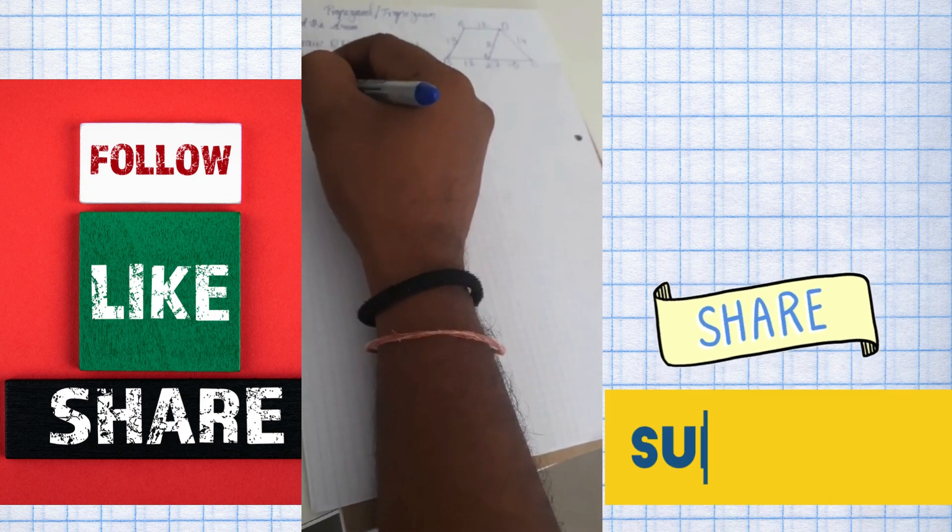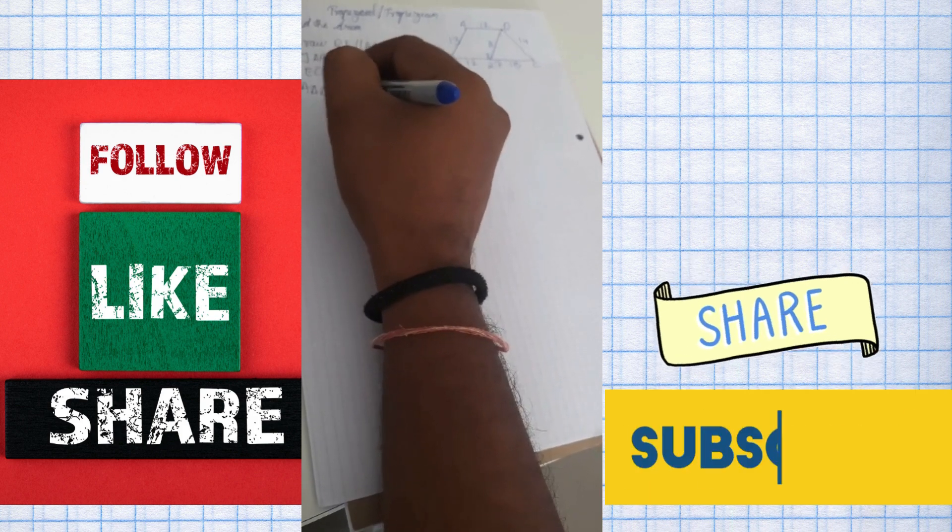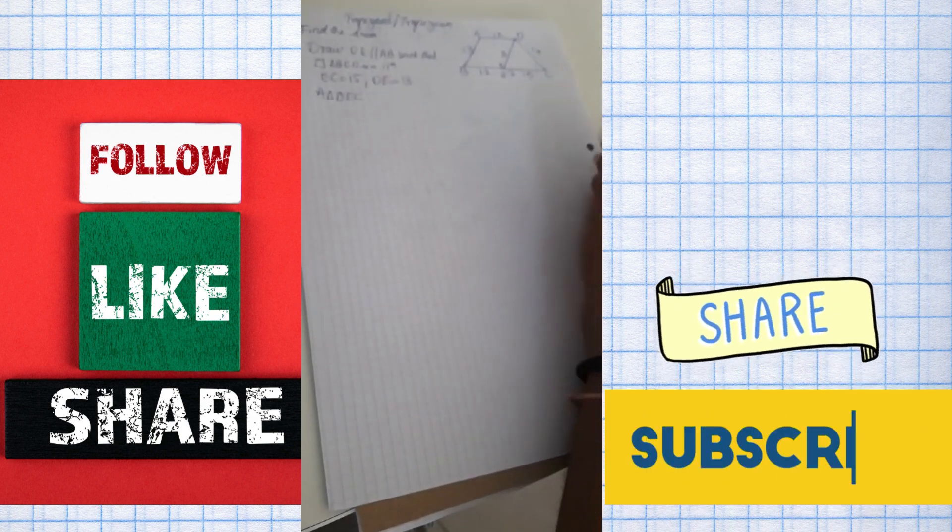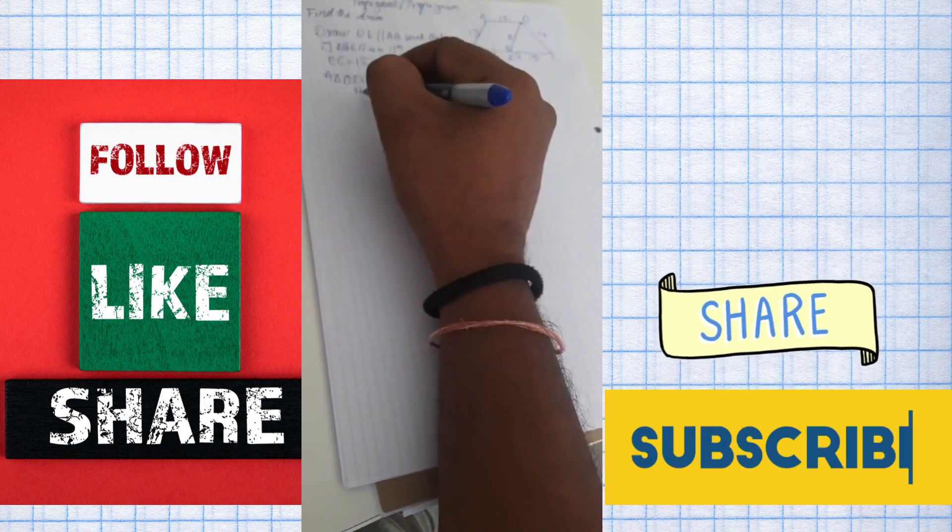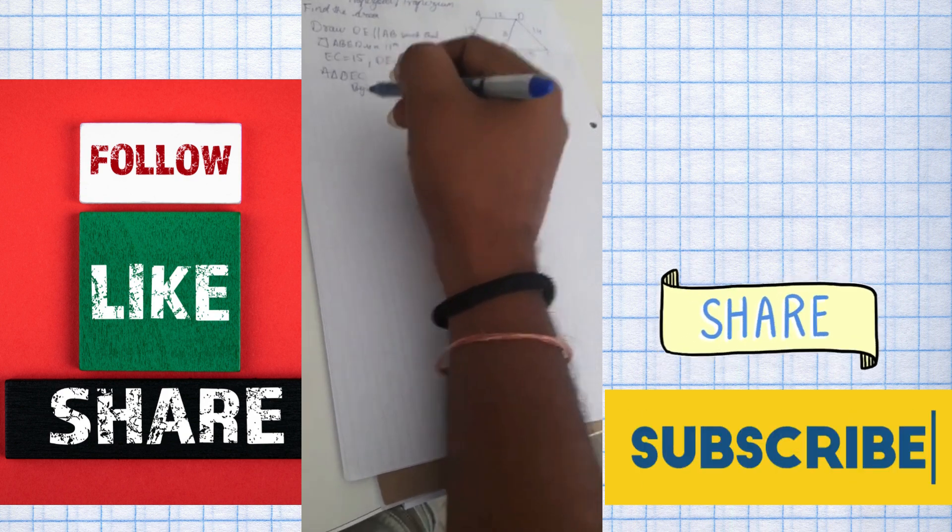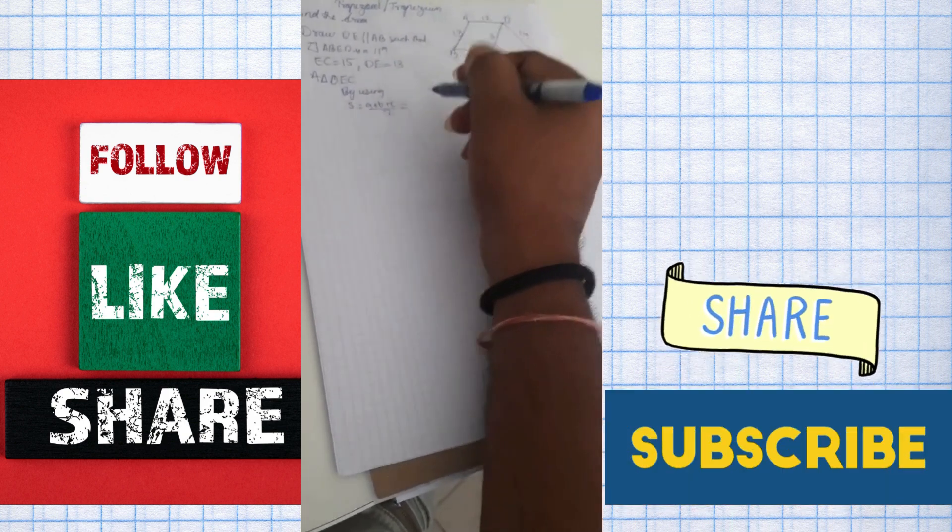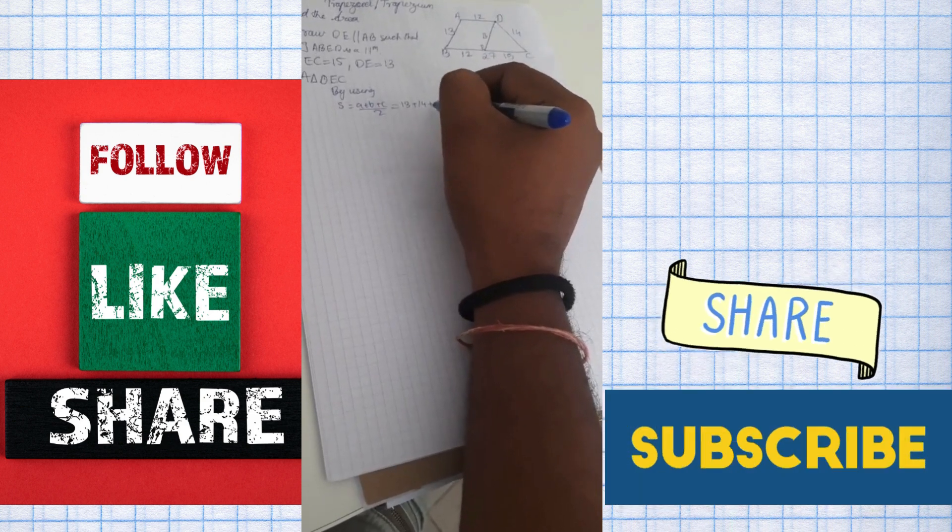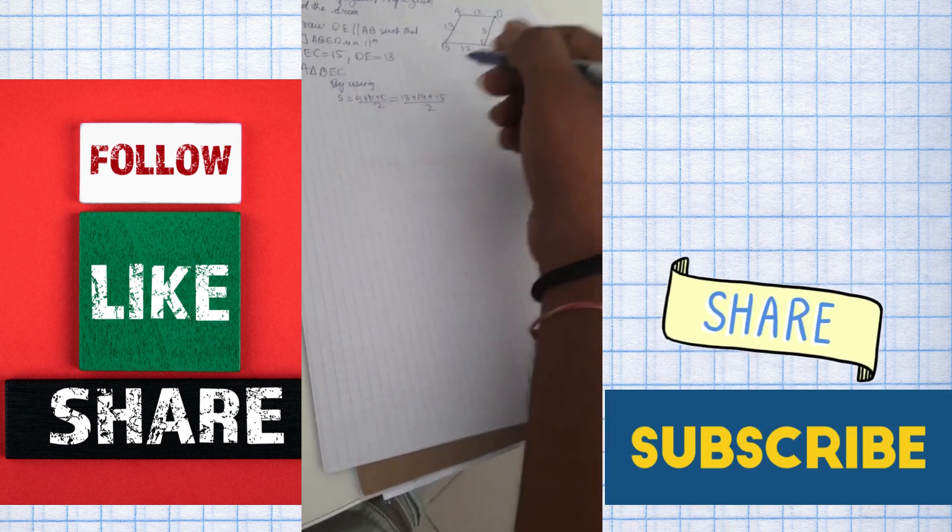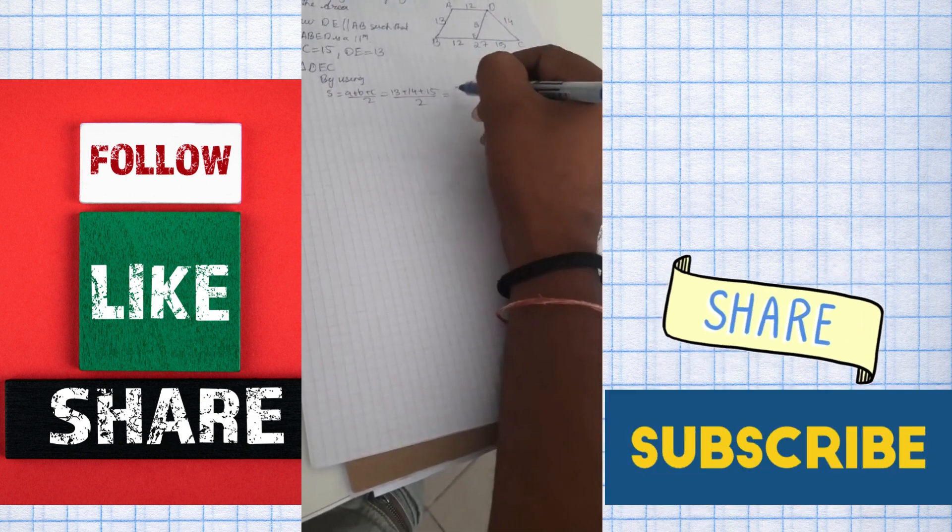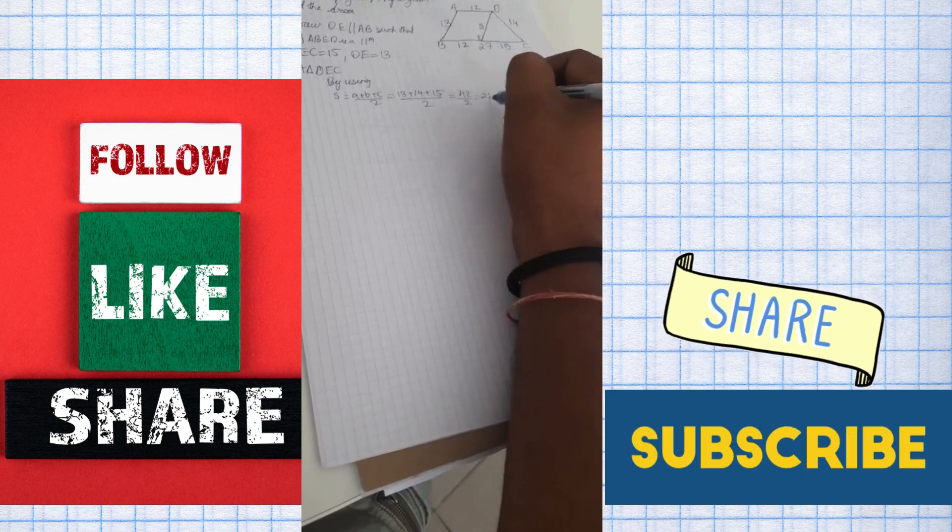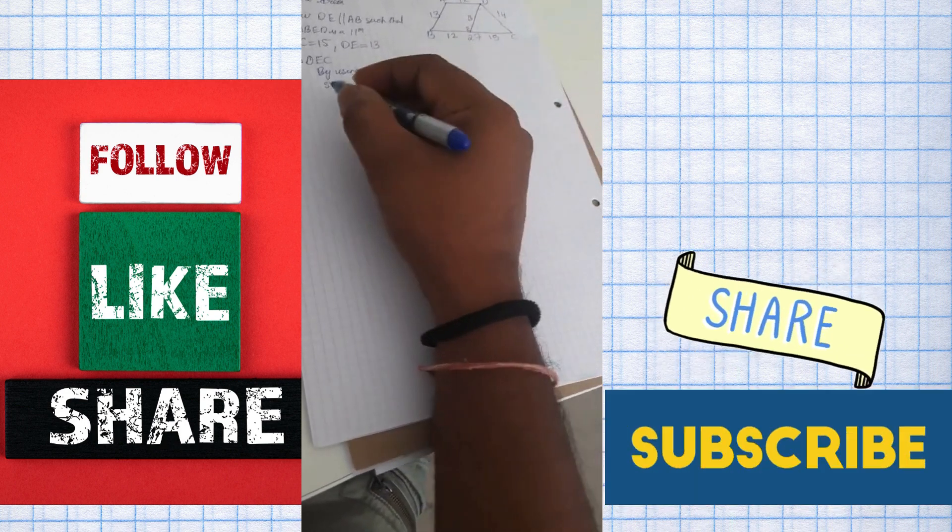Now we find area of triangle D, E, C. Pay attention, we are using Heron's formula. S which is A plus B plus C upon 2 equals 13 plus 14 plus 15 upon 2, which goes out to be 42 by 2, which is 21. So your semi-perimeter is S.